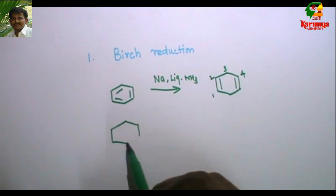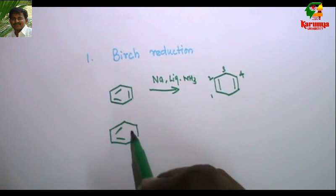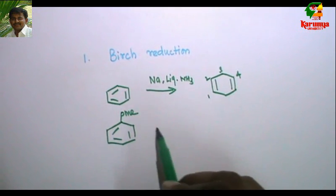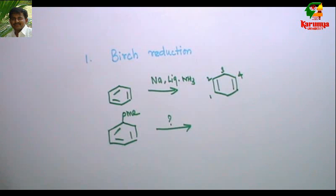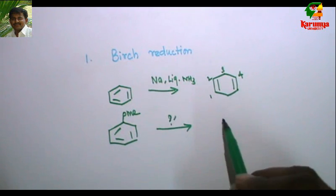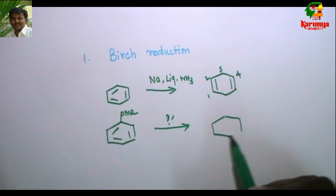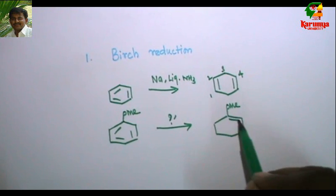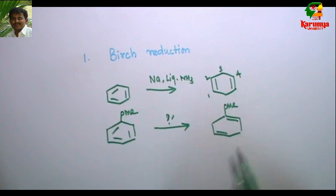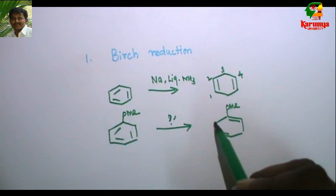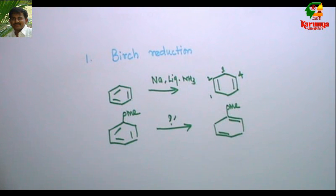If you go for an electron-donating group under the same conditions, the product you get will have hydrogen added at the ortho portion — for example, with an ether (OMe group), you get that product.